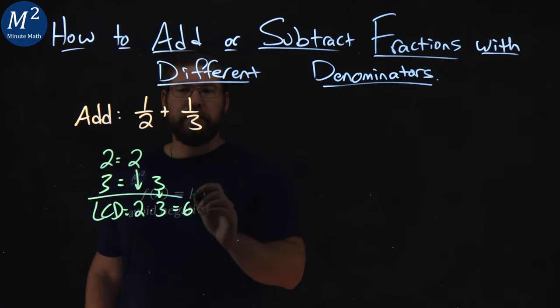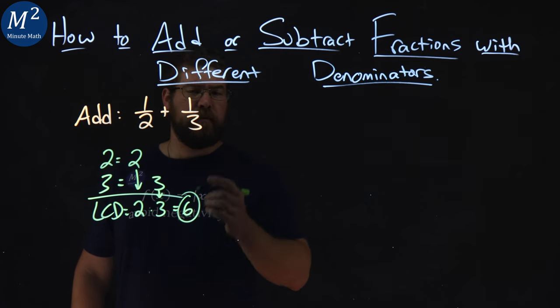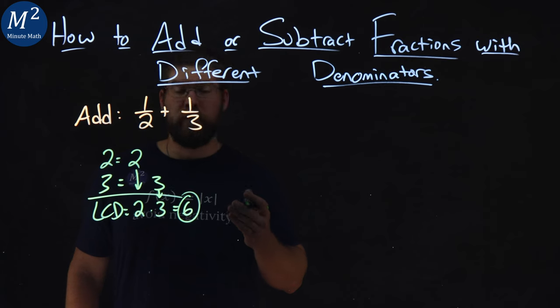So the LCD of the two fractions is 6 here. 2 gets there by 2 times 3, and 3 gets there by 3 times 2.